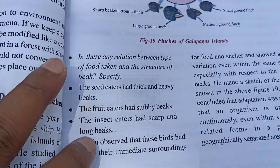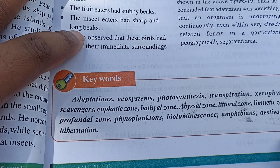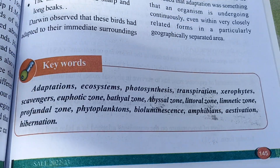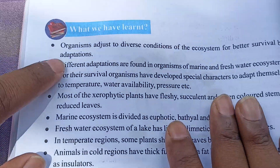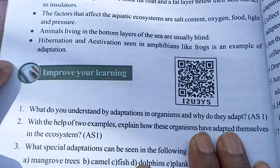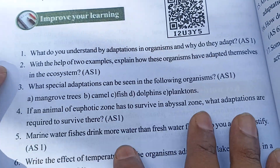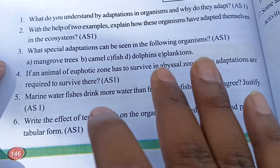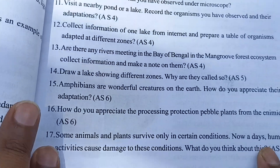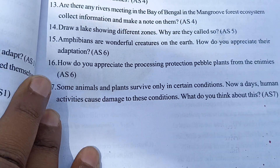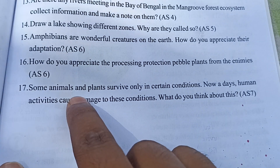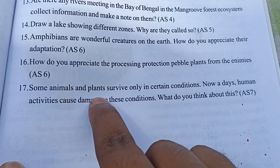You can see here this chapter has lots of keywords. First of all we will see the keywords, after that we will see what we have learned, which is already in your textbook so we will not cover that. After that we will see the question answers — there are six questions here, and in total there are 17 questions only, so till here we will discuss.